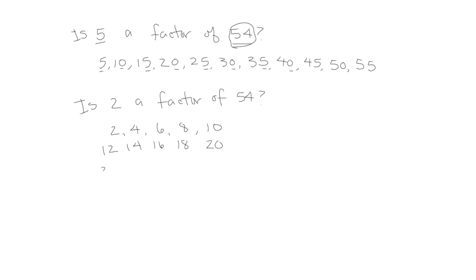When we're counting by 2s, in the ones place there's always a 2, a 4, a 6, an 8, or a 0. We call those numbers even. Numbers with a 2, 4, 6, 8, or 0 in the ones place are even numbers. So if the number we're looking at has an even number in the ones place, we know 2 is always a factor. 54 has a 4 in the ones place, so we know that 2 has to be a factor.